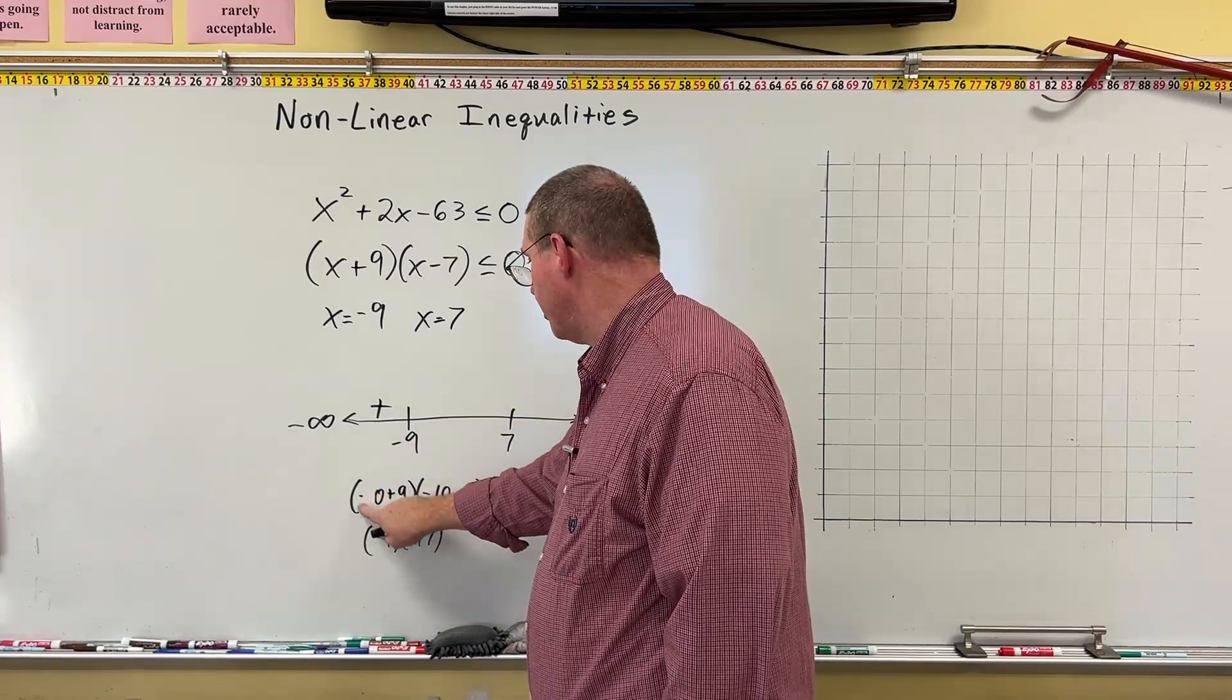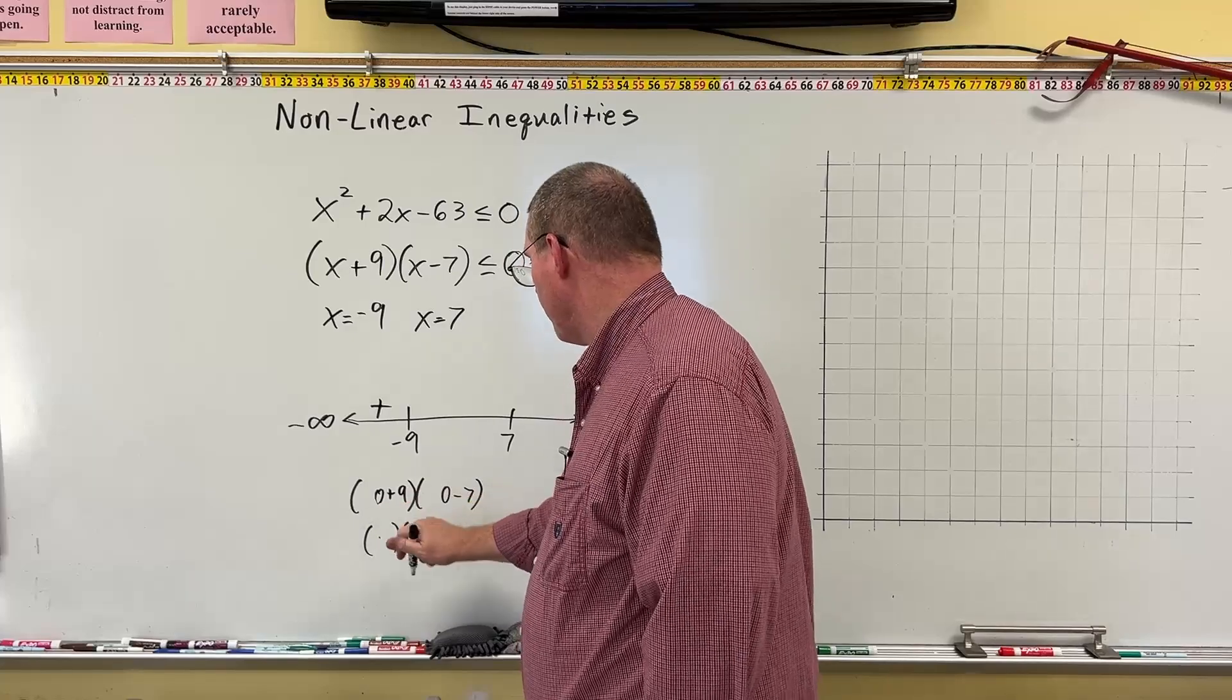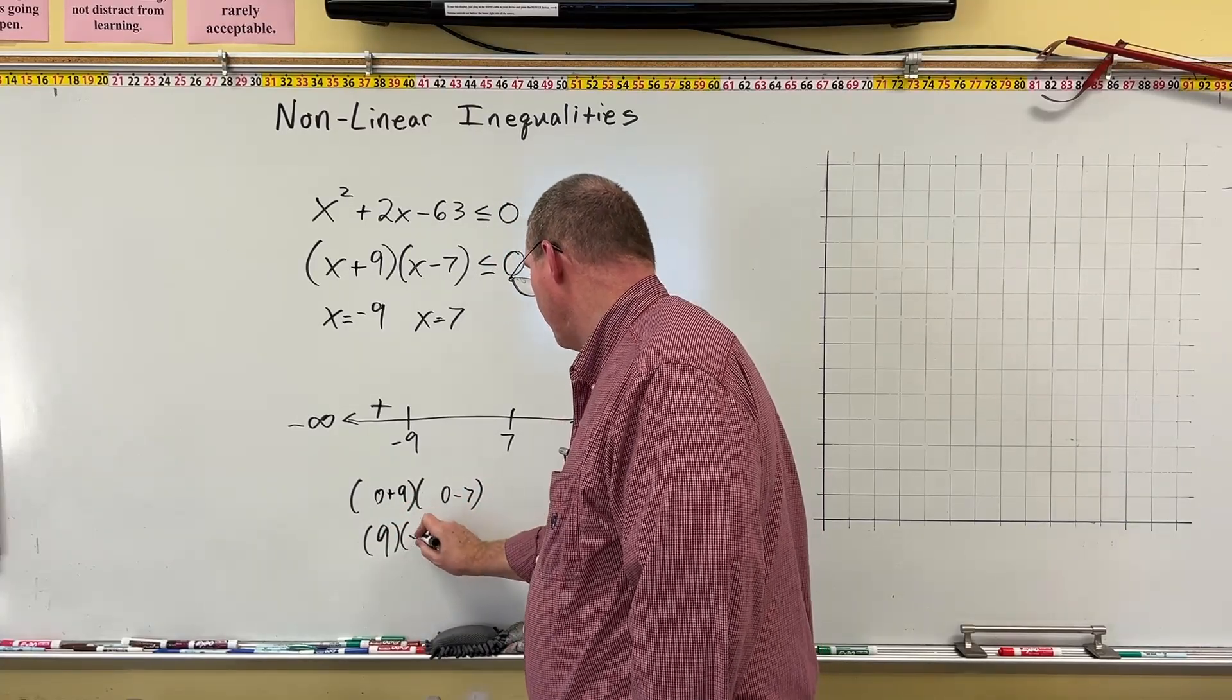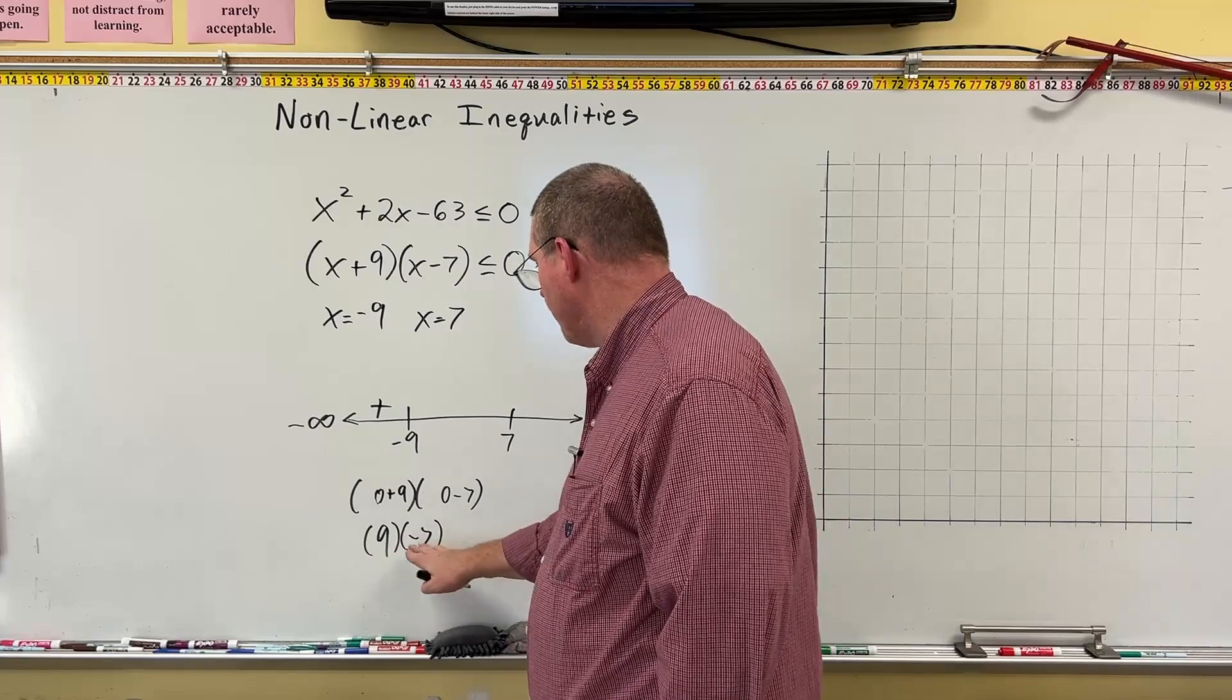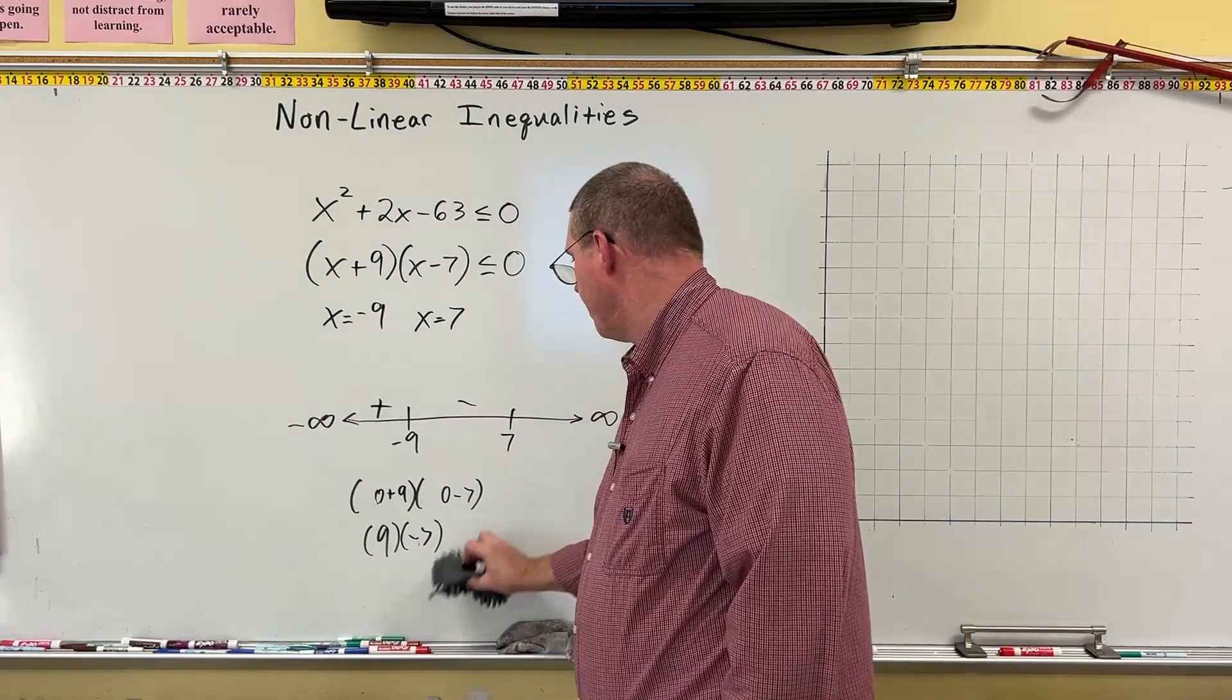Now let's pick a number between negative 9 and 7. Well, 0 is in here, so let's just do 0. That's easy. So 0 plus 9 is 9. And 0 minus 7 is negative 7. And 9 times negative 7 is negative 63. And that's a negative number.